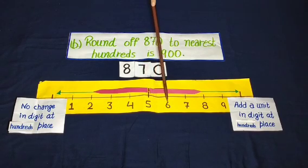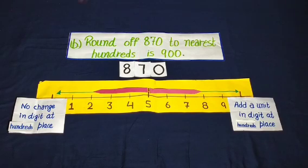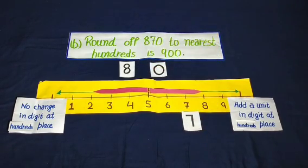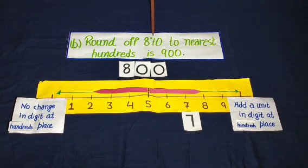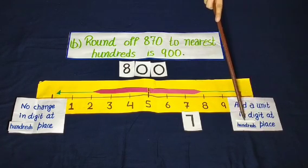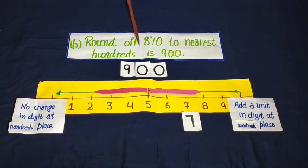If the digit is 5, 6, 7, 8, or 9 at the tens place, add a unit to the digit at the hundreds place. Here the number is 870 and at the tens place the digit is 7. Now we put 0 at the ones place and 0 at the tens place. So add a unit to the hundreds place — 8 becomes 9. So round of 870 to nearest hundreds is 900. It is true.